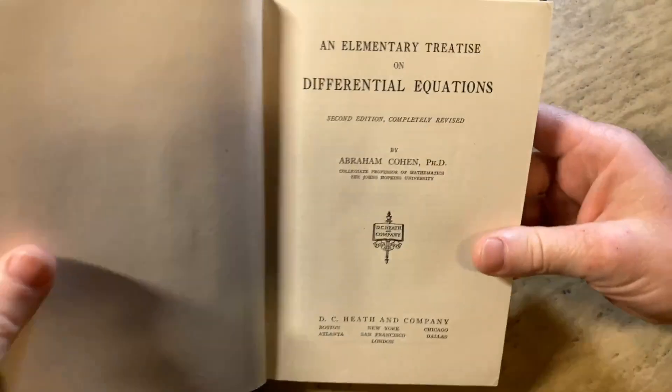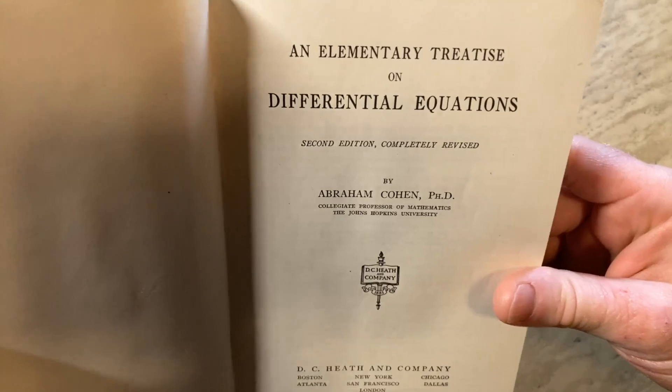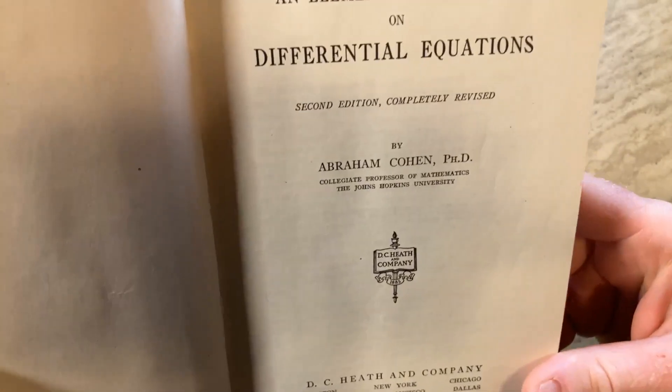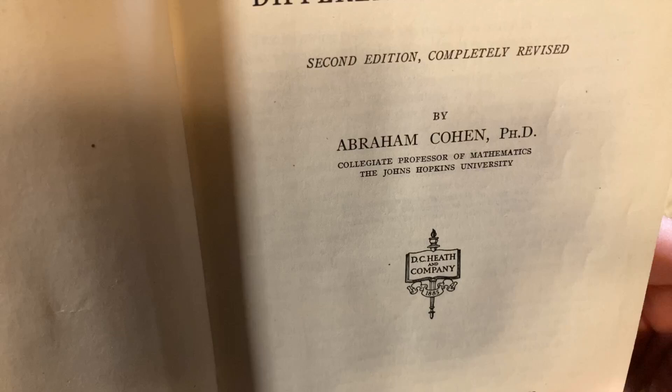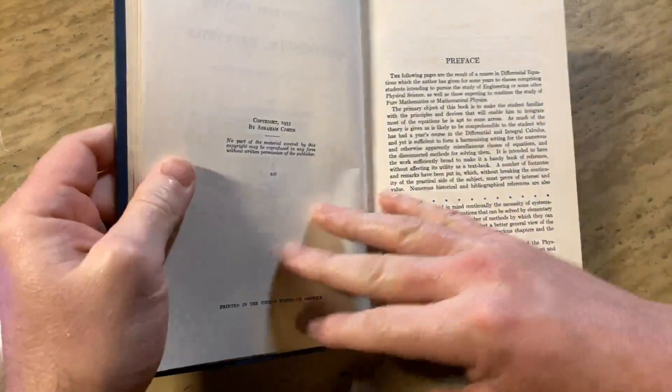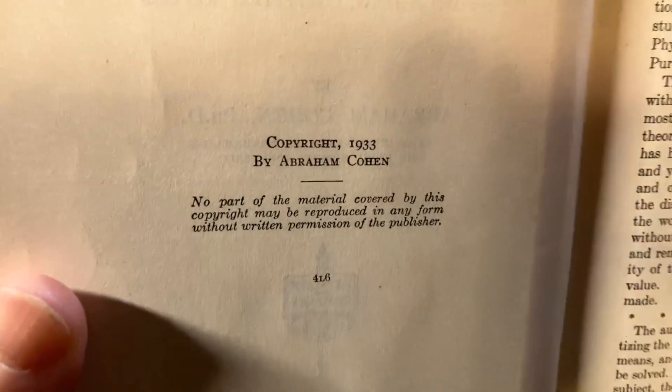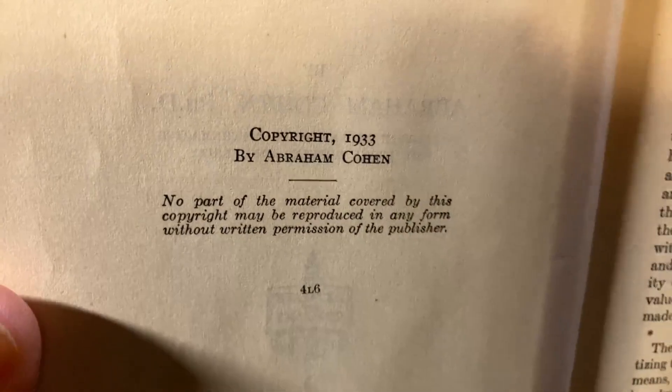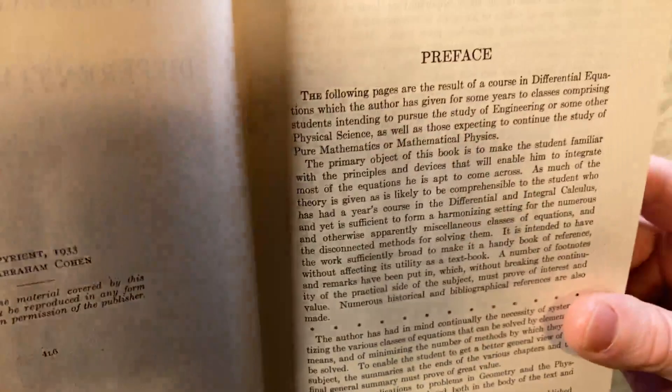This book is An Elementary Treatise on Differential Equations by Abraham Cohen PhD, college professor of mathematics at Johns Hopkins University. Very old book on differential equations. Here's the copyright 1933 by Abraham Cohen.